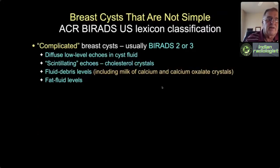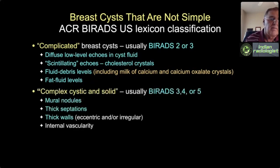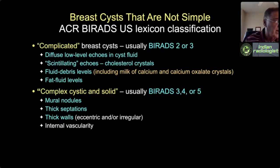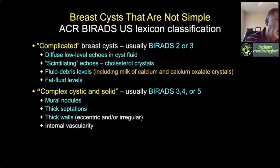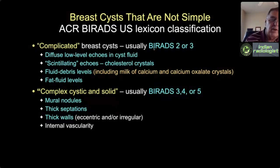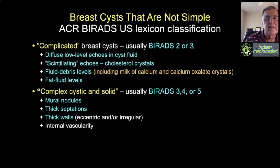In the ACR BI-RADS lexicon, 'complicated' has one connotation and must be distinguished from 'complex.' In BI-RADS edition 5 (2013), we took away the word 'complex' and changed it to 'complex cystic and solid,' because people couldn't remember whether complicated or complex was worse. Complicated breast cysts are usually BI-RADS 2 or 3—if multiple, incidental, and bilateral, they're BI-RADS 2. If a dominant complicated cyst causes a palpable or mammographic abnormality, you might call it BI-RADS 3.